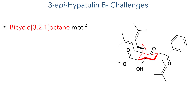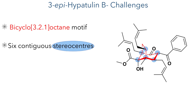This structural analysis reveals several challenges for the synthesis of these compounds. The most obvious is the bicyclo[3.2.1]octane motif which contains 6 contiguous stereocenters, 3 of which are quaternary. In addition it features 3 prenyl groups, which are the signature of the polycyclic polyprenylated family of compounds.